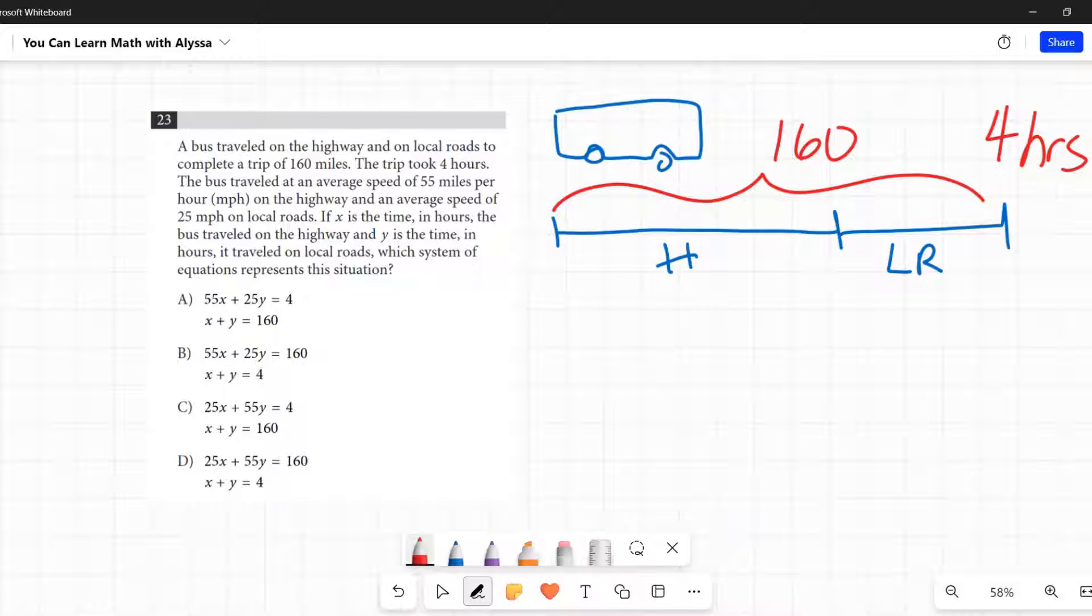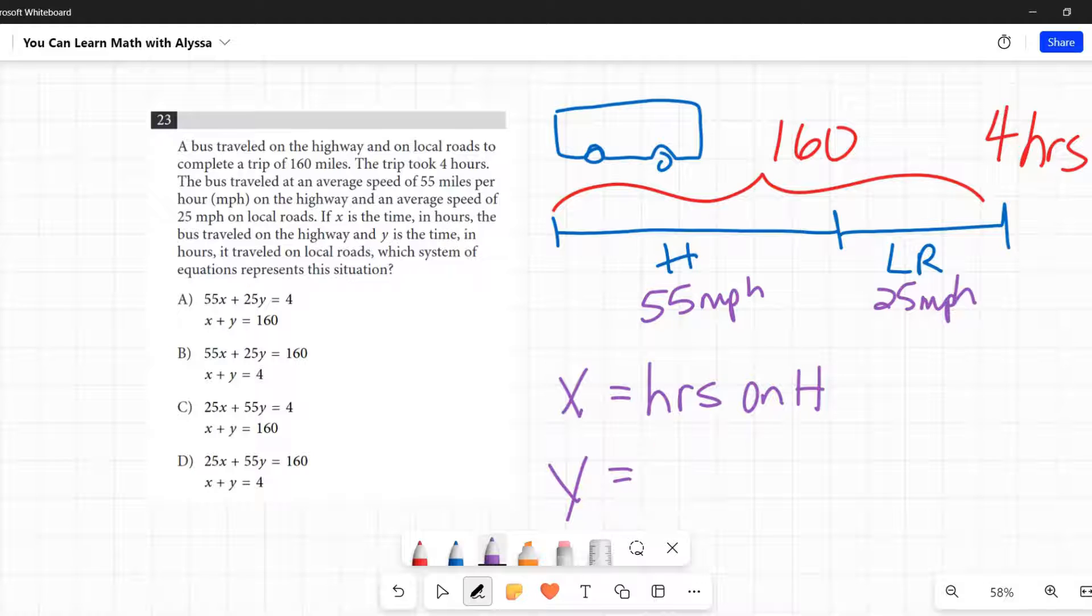The bus traveled at an average speed of 55 miles per hour on the highway, so here it's going 55 miles per hour. And on the local roads, average speed of 25 miles per hour. If x is the time in hours, so x equals hours that the bus traveled on the highway, hours on highway. And y is the time in hours that it traveled on local roads.